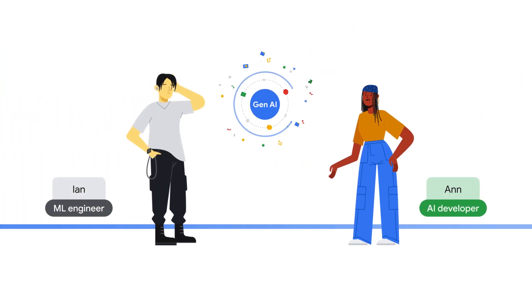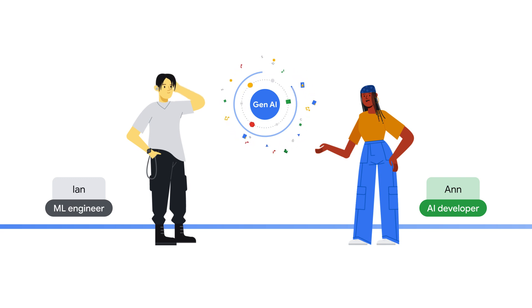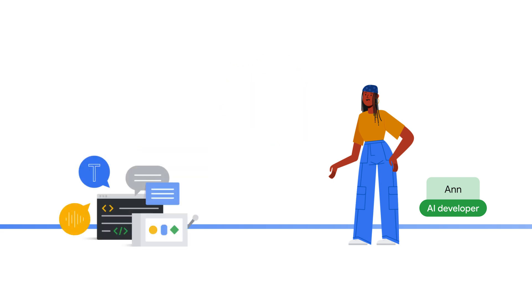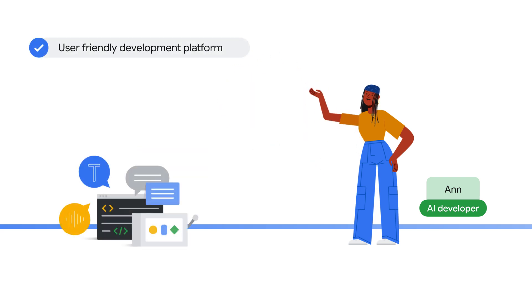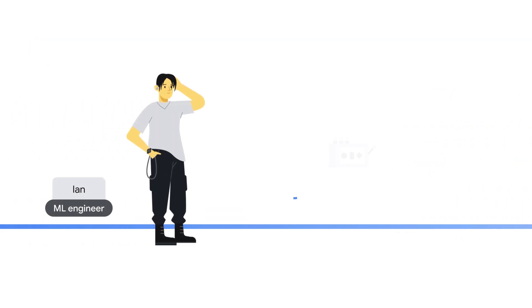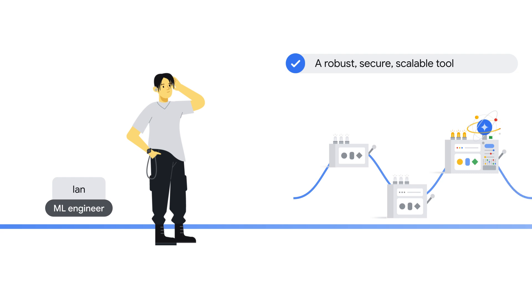Ian and Ann also believe Gen AI would benefit the business and are eager to assist. However, they are also looking for Gen AI to solve challenges they face. As an AI developer, Ann seeks a user-friendly development platform that facilitates prompt engineering from drafting, evaluating, and refining to manage prompts. Meanwhile, as an ML engineer, Ian requires a robust, secure, and scalable tool that builds a pipeline to deploy prompt-to-production and fine-tune Gen AI models for optimal results.